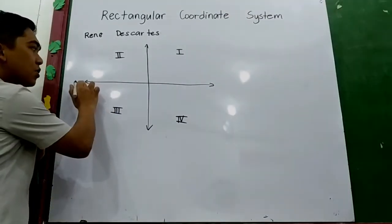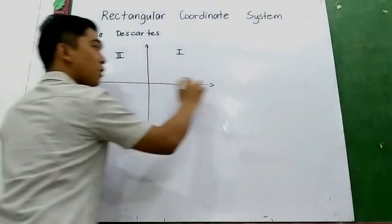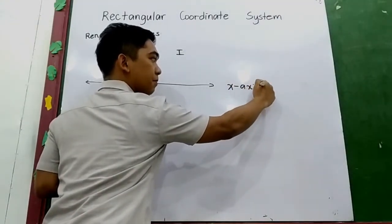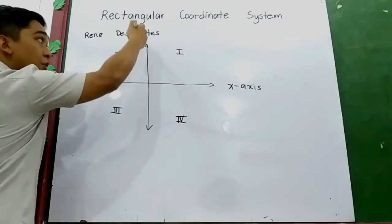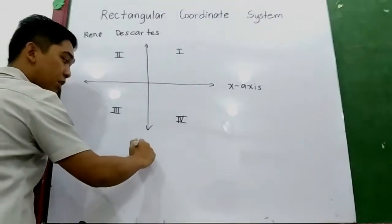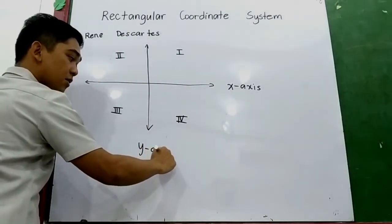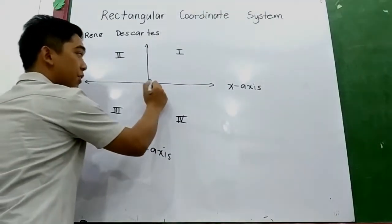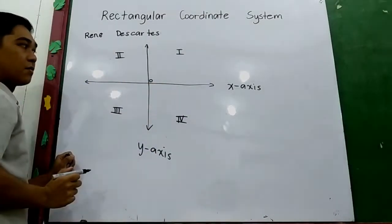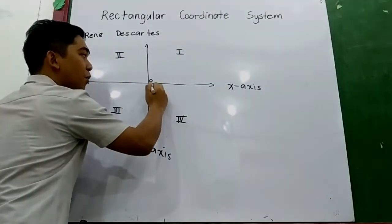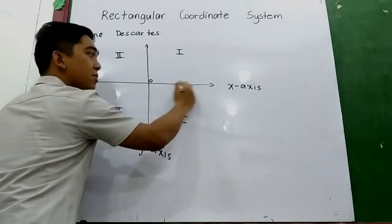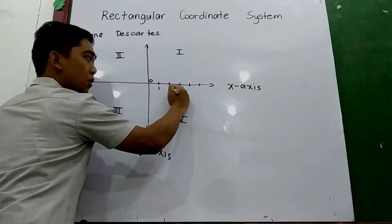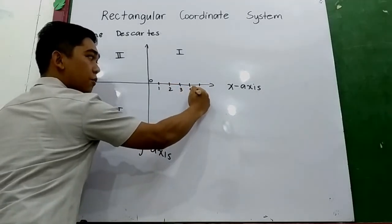The horizontal line is what we call the x-axis, and the vertical line is what we call the y-axis. This is the origin. From the origin, the numbers on the right side are the positive numbers: one, two, three, four, five.